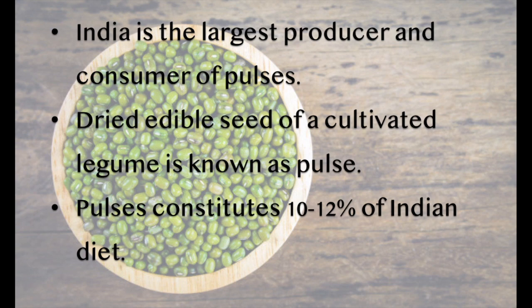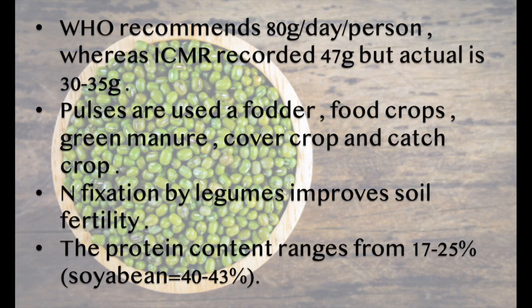India is the largest producer and consumer of pulses. Pulses constitute 10–12% of the Indian diet. Pulses are used as fodder, food crops, green manure, cover crop, and catch crop. Nitrogen fixation by legumes improves soil fertility. The protein content ranges from 17–25%.